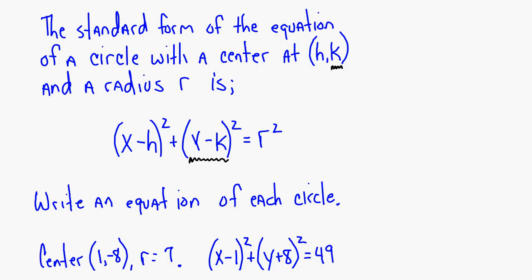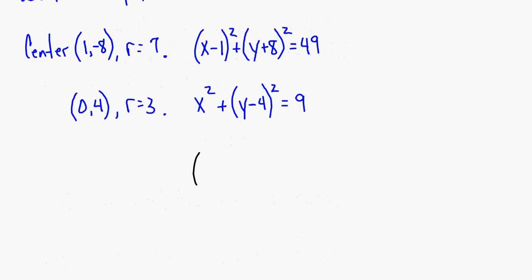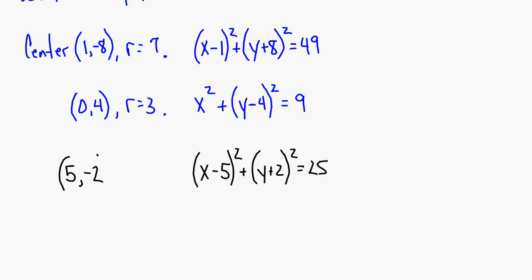If you're given the equation X minus 5 squared plus Y plus 2 squared equals 25, and asked what is the center, it would be at (5, -2). And the radius of that circle would be equal to 5.